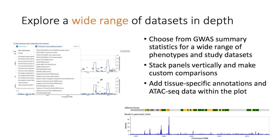The nice thing about the portal is it's not just showing a single region plot — it brings together an enormous range of different datasets. You can interactively select through the portal's drop-down menus and stack panels vertically to make custom comparisons between different phenotypes or different analyses within a dataset. The last numbers I've seen suggest there are 80 datasets and 189 traits to choose from, with many possible combinations. The portal also provides an interval track plot.